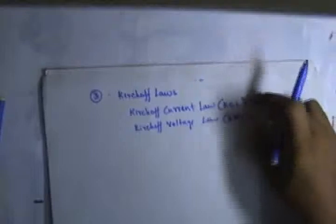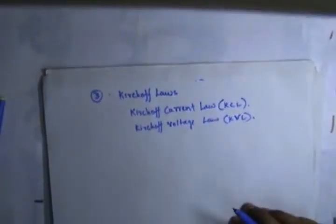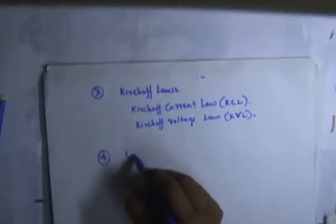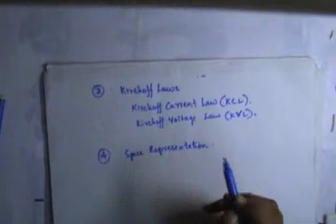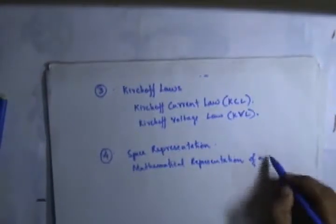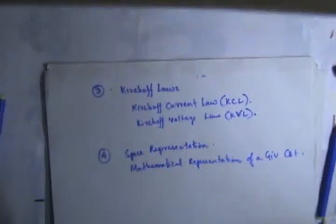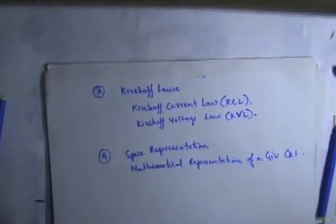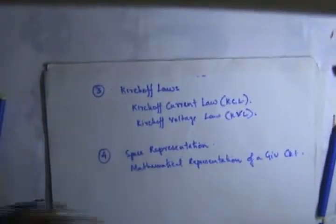The next topic is state space representation — getting a circuit into its mathematical form. Mathematical representation of a given circuit is essential: whenever you get a circuit, you have to represent it in mathematical form so that you can analyze it using numerical methods. We are going to represent each and every circuit in mathematical form, and that is what we will discuss in the fourth lecture.